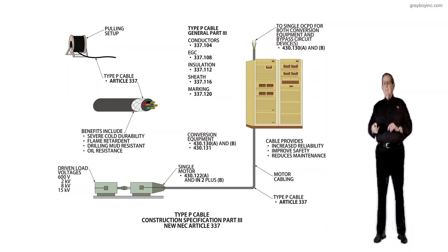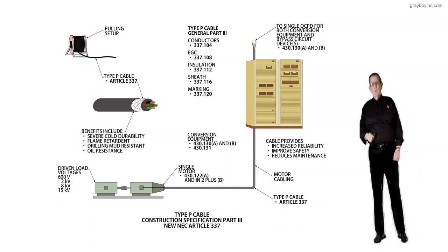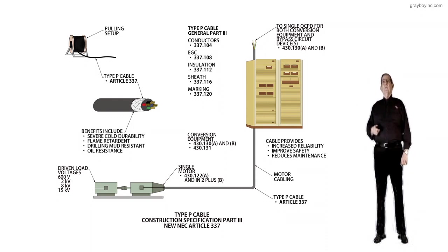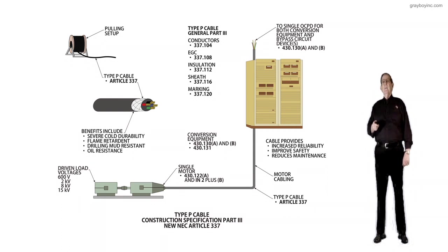insulation, sheath, and marking, and that is what we want to look at here. So no use repeating the same information. Now notice we'll look and review first the Type P Cable, which is General Part 3 right next to the adjustable speed drive system that you see there.